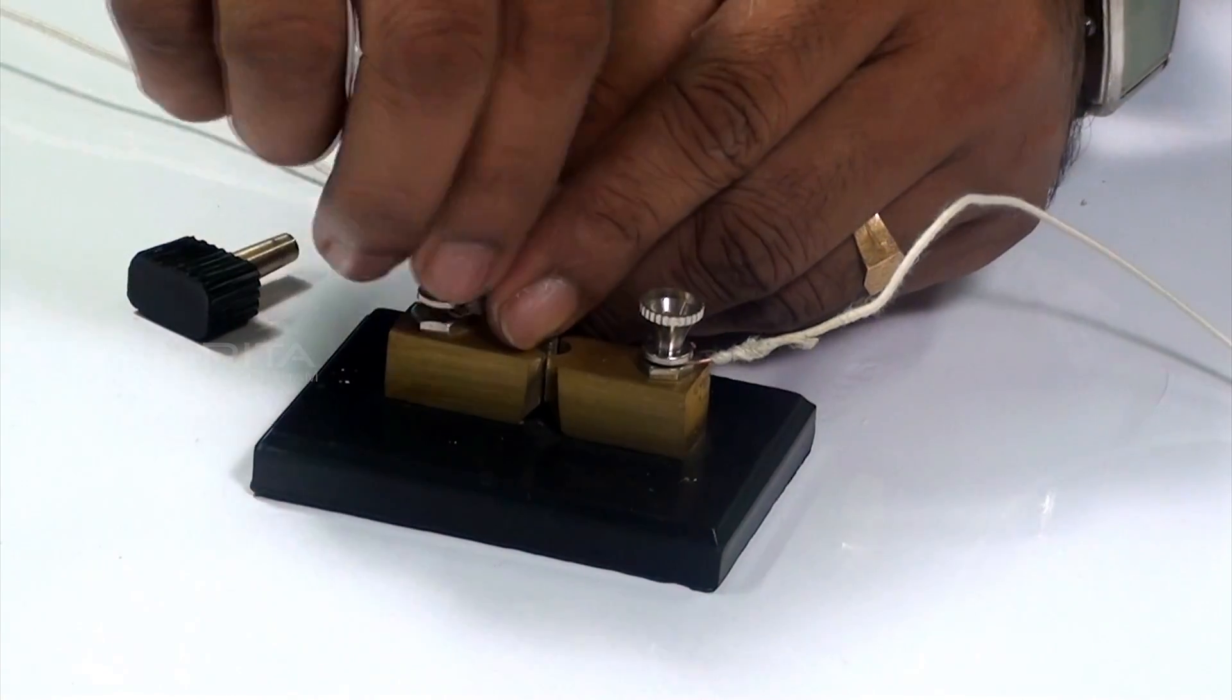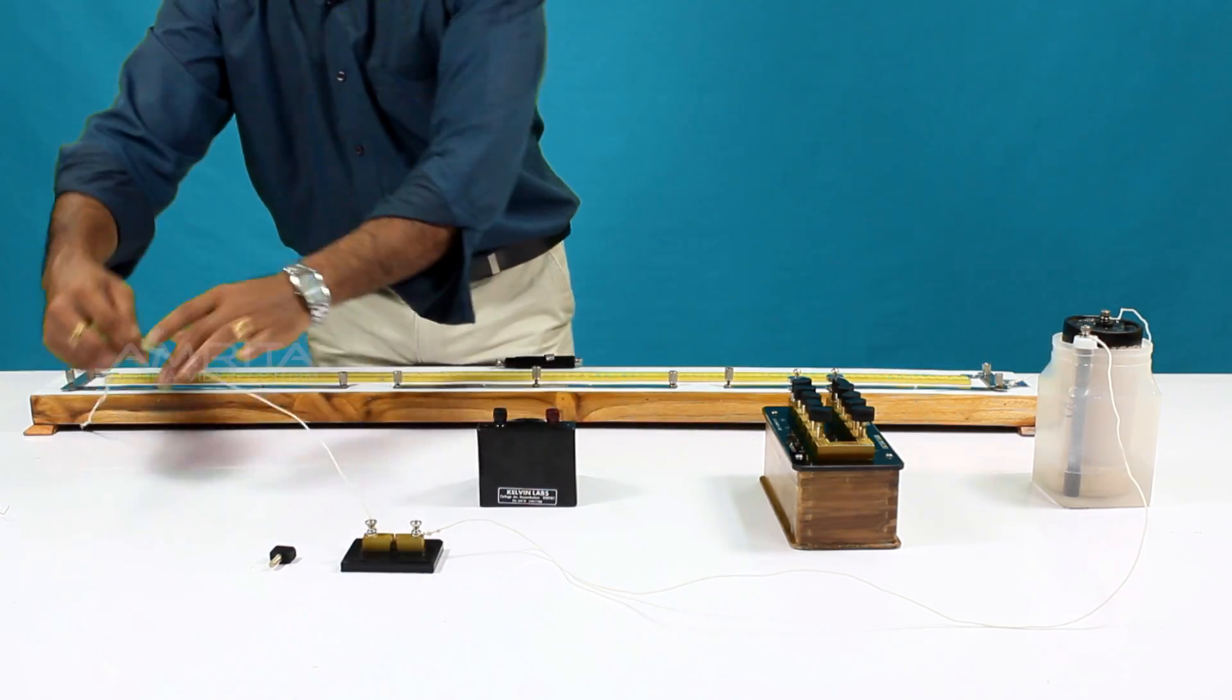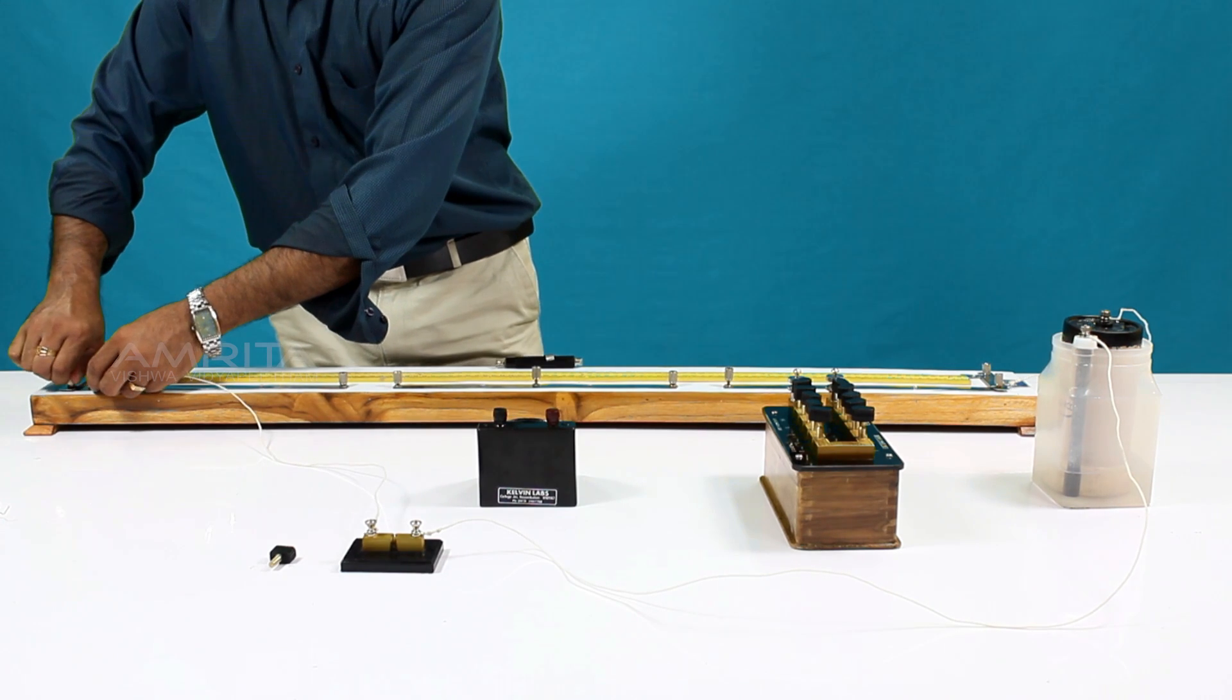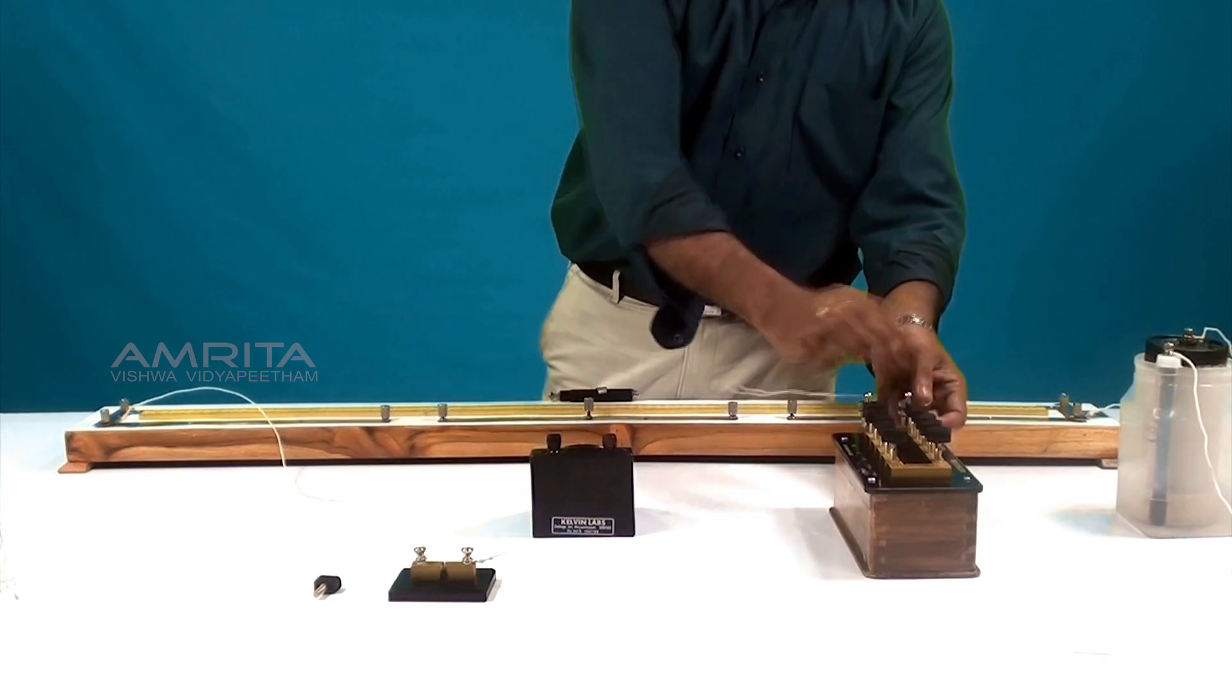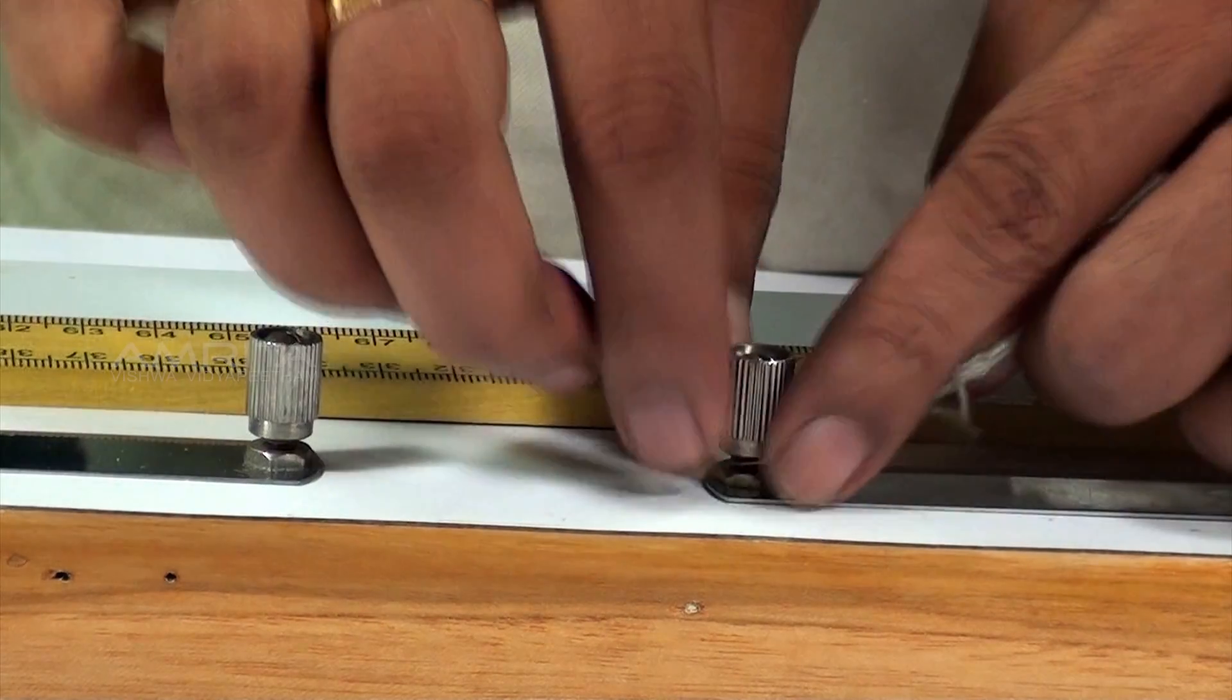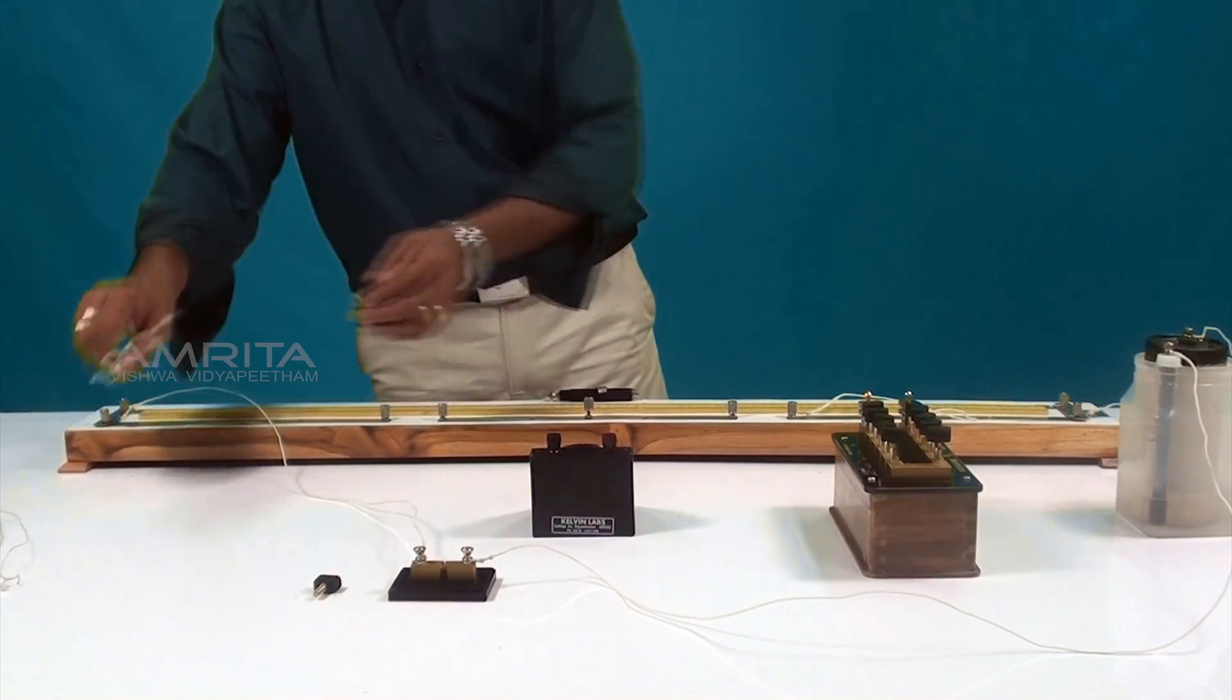The other end of the key is connected to terminal B of the meter bridge with another connecting wire. Now, introduce the resistance box in gap G1 of the meter bridge.